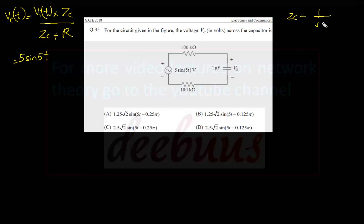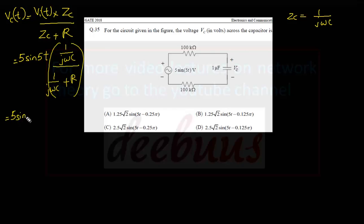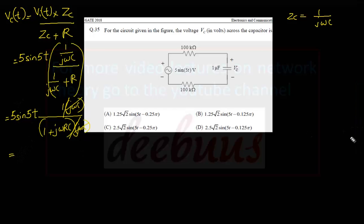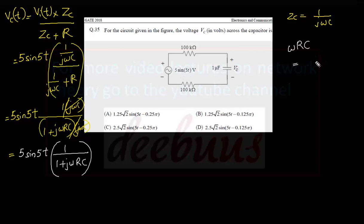Substituting, Vi(t) = 5 sin(5t), and Zc = 1/(jωC). Simplifying the voltage divider gives Vc(t) = 5 sin(5t) × 1/(1 + jωRC). We now calculate ωRC: ω = 5, R = 100k + 100k = 200 kΩ, C = 1 μF. So ωRC = 5 × 200×10³ × 1×10⁻⁶ = 5 × 0.2 = 1.